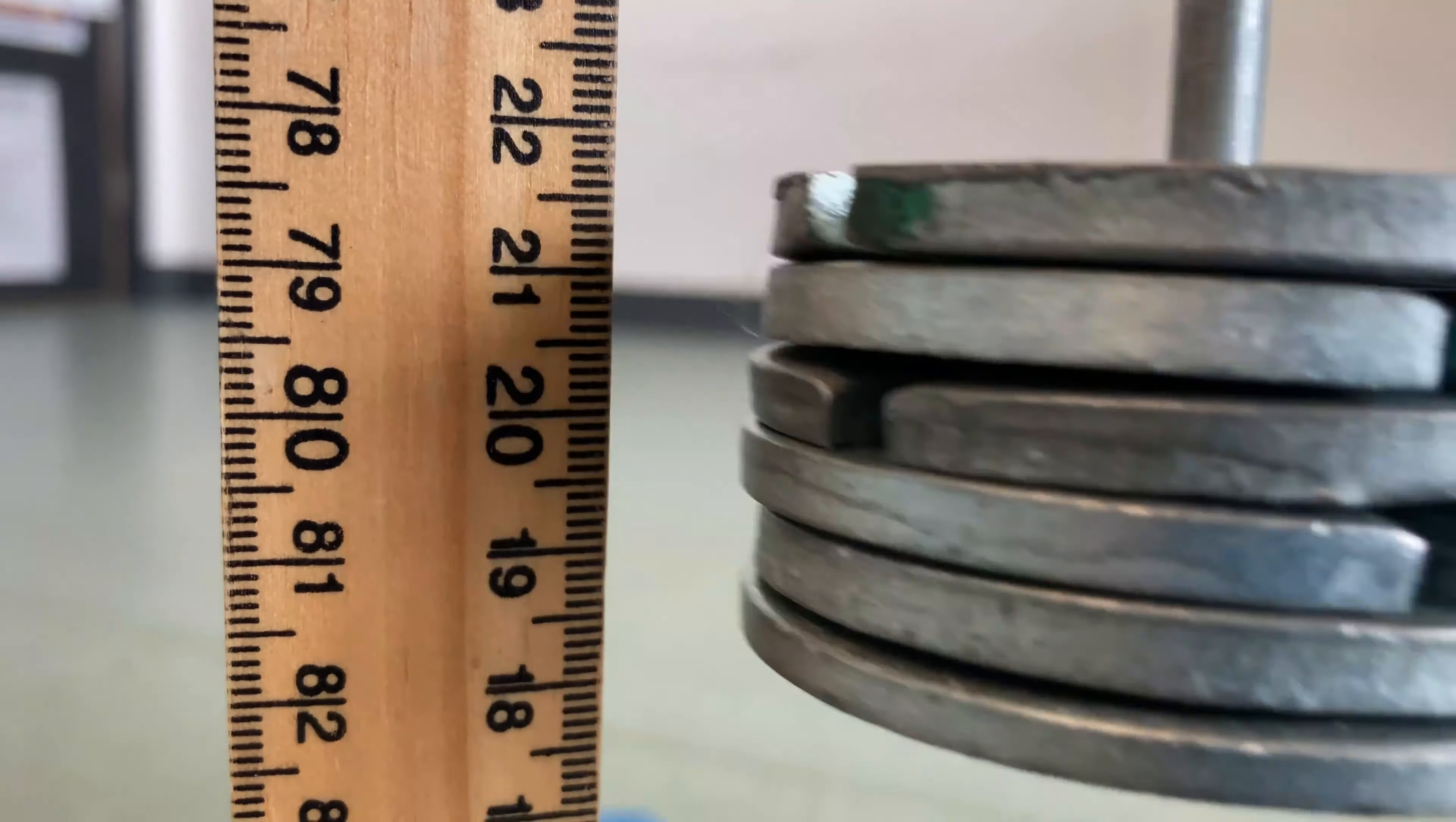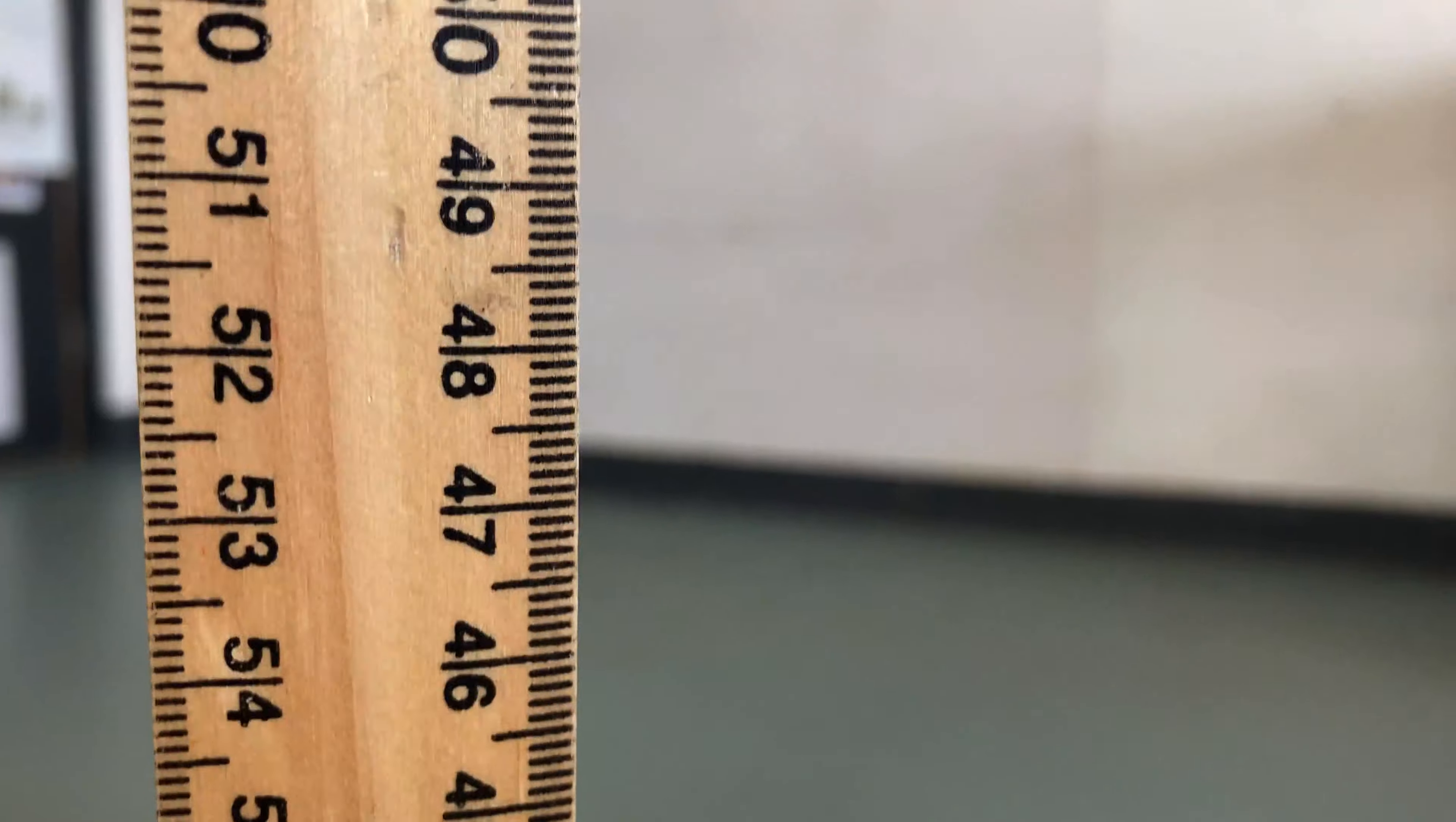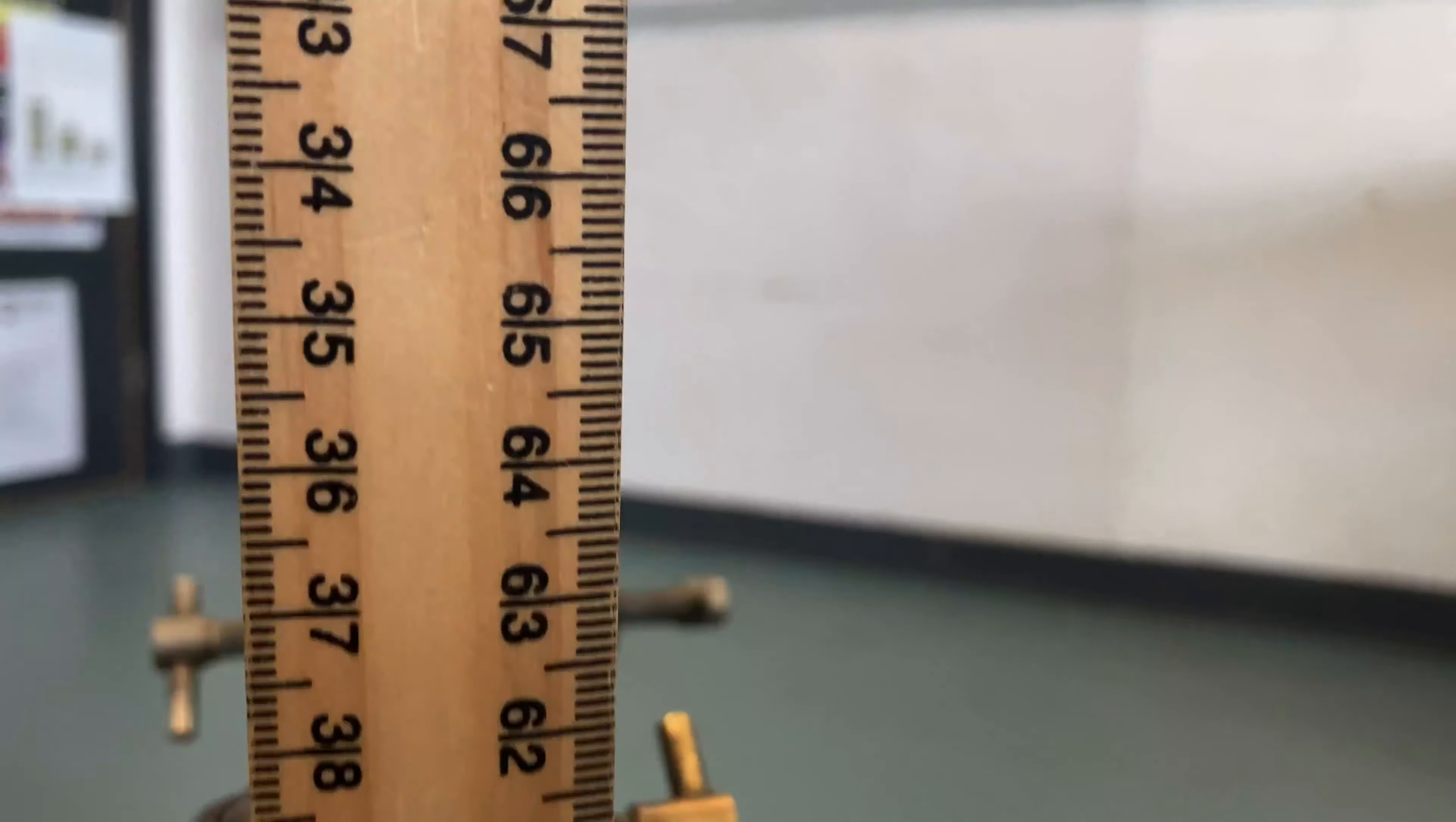Let's look at another example. What about if I change the height that I was dropping the masses from, but kept them the same size? What would my independent, dependent, and control variables be this time? Can you figure it out?